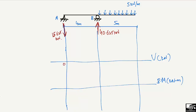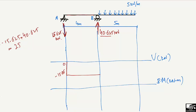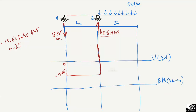To draw the shear force diagram: starting from the left side, the value is zero. Since RA is acting downward (15.625 kN), I bring this line down to minus 15.625 — negative because it is acting downward. There is no load on the beam over the 4-meter span, so it will be a straight horizontal line. Then at B, there is a reaction acting upward of 40.625 kN, so minus 15.625 plus 40.625 gives us plus 25.